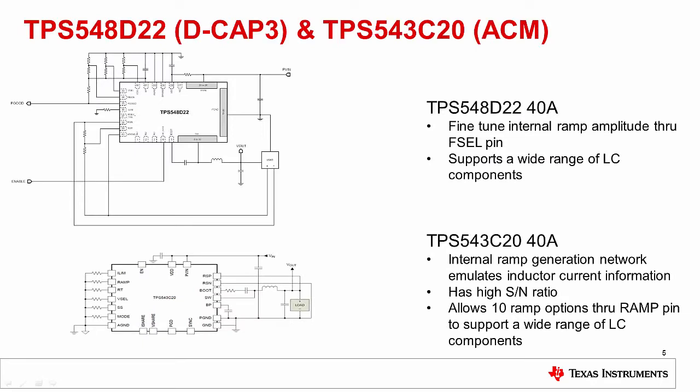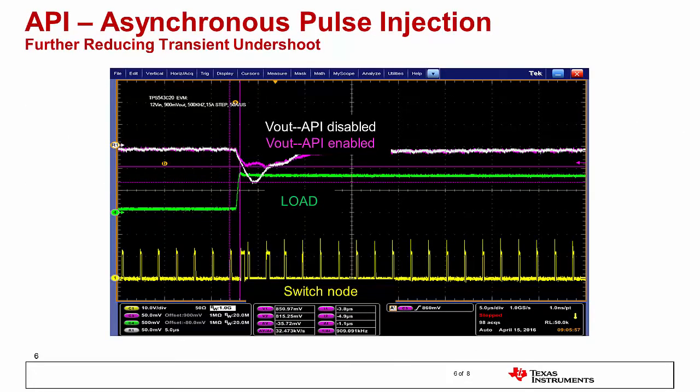COT solutions are well known for their simple designs. It can be seen that the internally compensated ACM results in a schematic that is just as simple. Pin-strapping functions can extend a lot of flexibility to the power designer. Asynchronous pulse injection, or API, is a mechanism employed to improve transient response by reducing the undershoot when there is a sudden load jump.